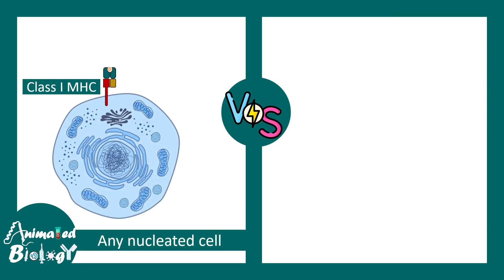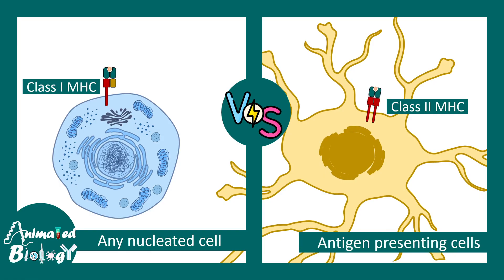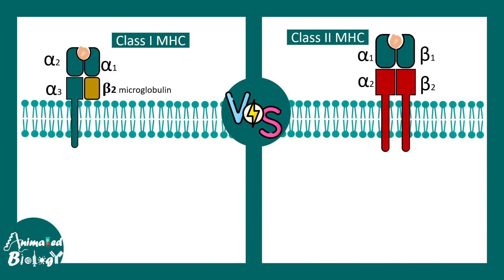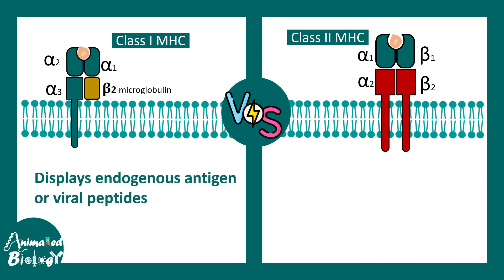There are two categories of MHC: Class 1 MHC, which is found in any nucleated cell, and Class 2 MHC, which is found in antigen presenting cells like dendritic cells. Class 1 and Class 2 MHC molecules differ in their structure and the type of antigen they display. Class 1 MHC displays endogenous antigens or viral peptides — every nucleated cell has this. Class 2 MHC displays exogenous antigens that came from an outward source.